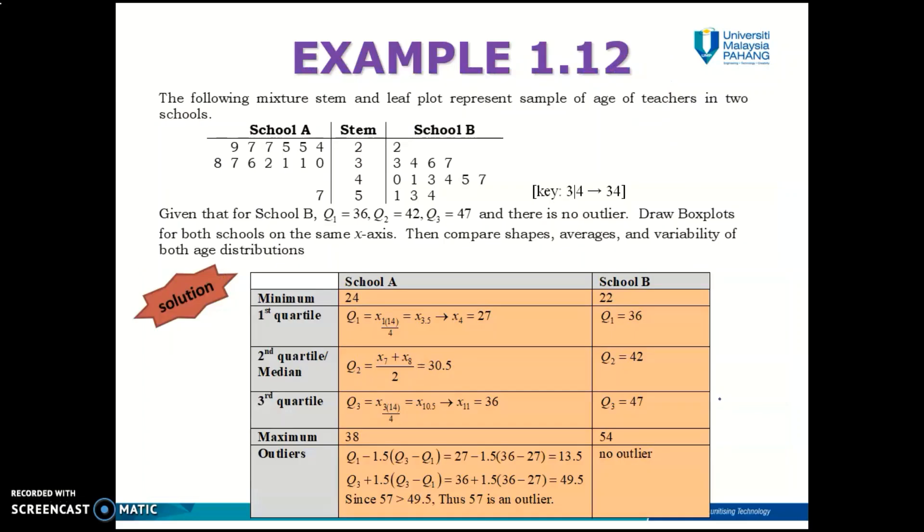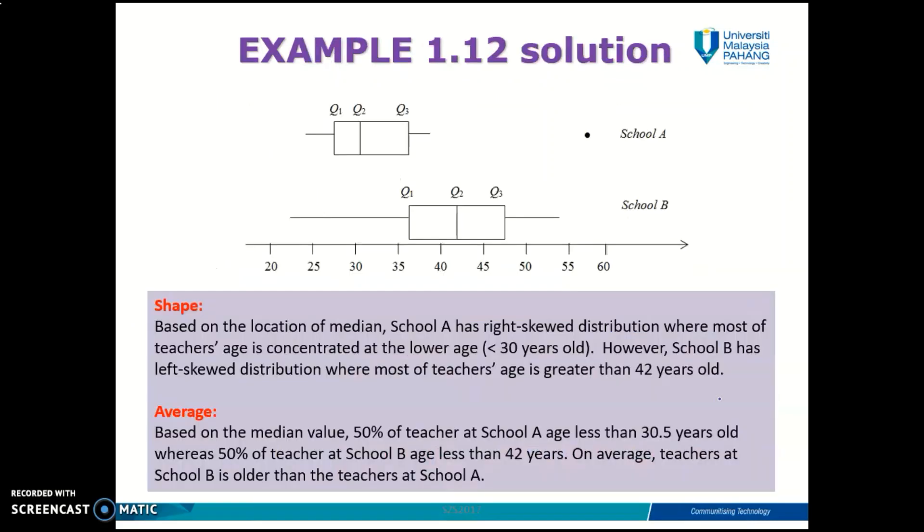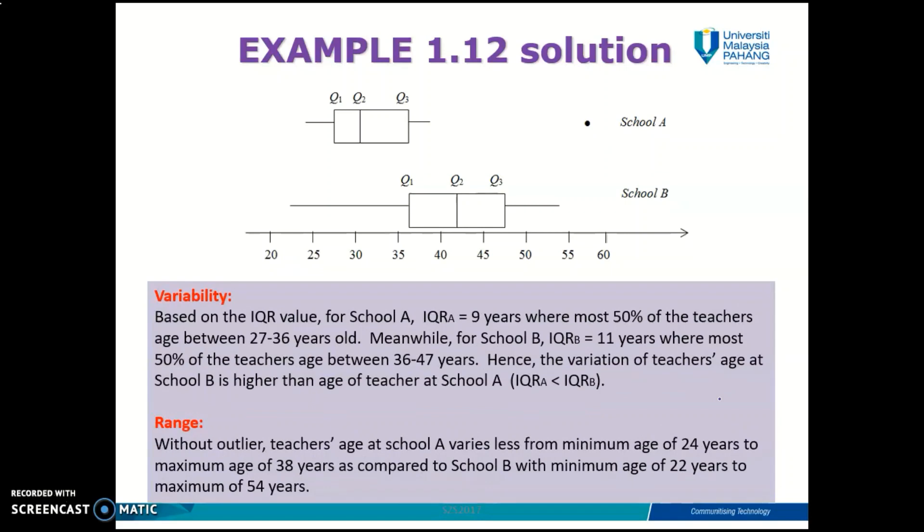In your slide note, we provide you with another example, another example that can help you to understand about how to identify outliers. And also, from these two sets in example 1.12, we also provide you with the boxplot and also the interpretations on the shape, on the average, on the variability, and also on the range for you to study and read. And you'll have a discussion among your friends. And if you have any questions, then please raise it up to your lecturers.